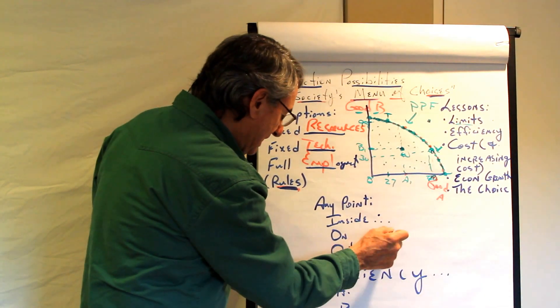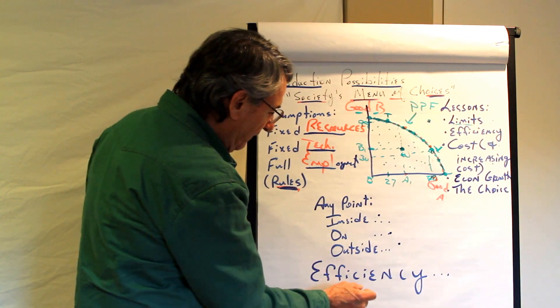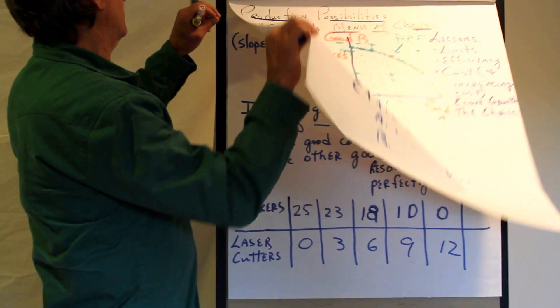So a point inside, outside, and on the production possibilities frontier. Efficiency is on the production possibilities frontier.